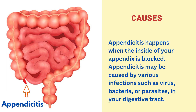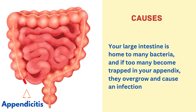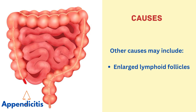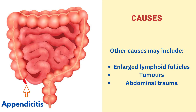Appendicitis happens when the inside of your appendix is blocked. It may be caused by various infections such as viruses, bacteria, or parasites in your digestive tract. Too many bacteria trapped in your appendix can overgrow and cause infection. Other causes include enlarged lymphoid follicles, tumors, and abdominal trauma.